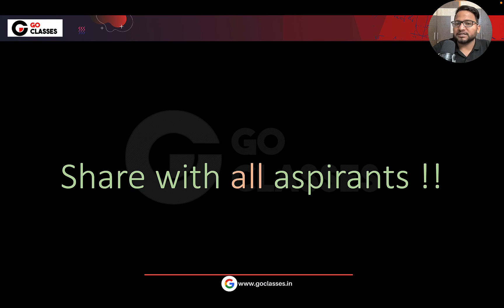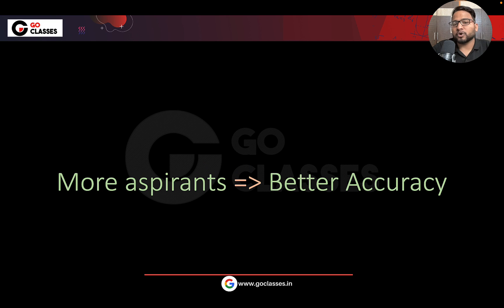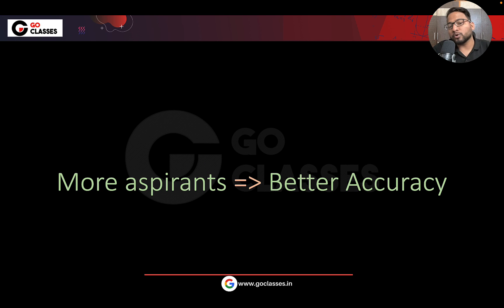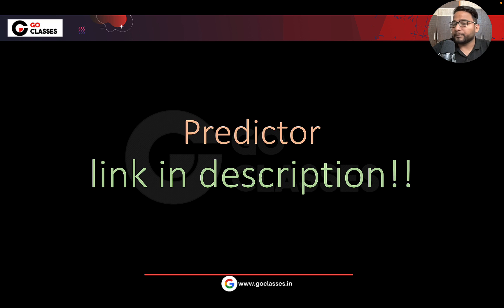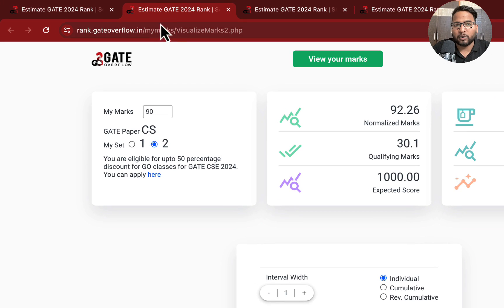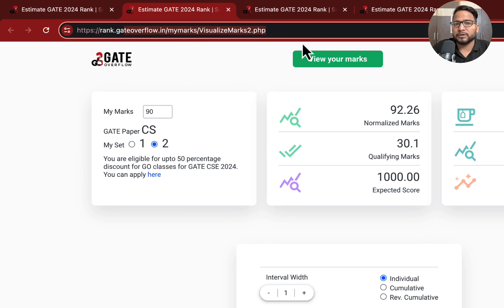Just share with all the experience you know, because more experience means better accuracy we will be getting. The more you share, the better the accuracy on the predictor and the better rank estimate you will get. The predictor link and everything is in the description — every link is in the description. You can also play with marks, and this particular link will also be in the description.